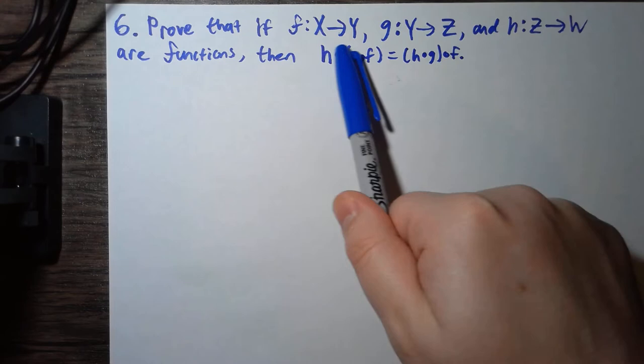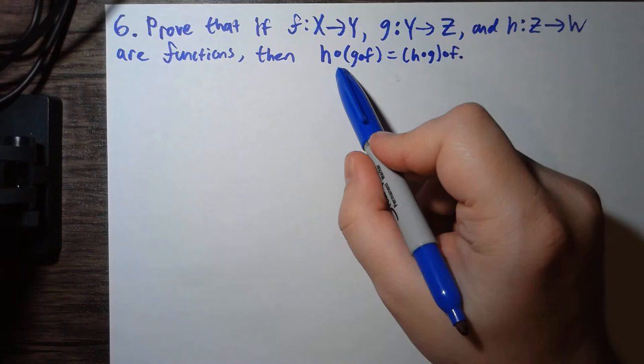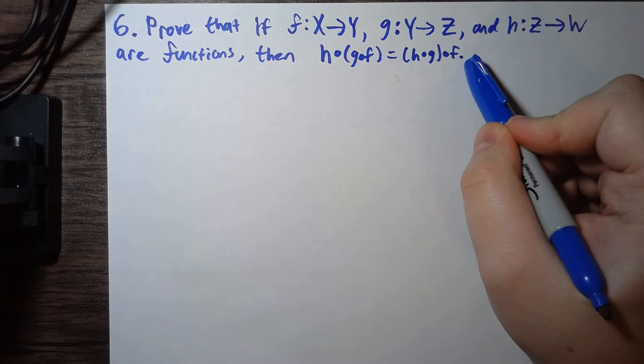Namely, we have functions f from X to Y, g from Y to Z, and h from Z to W. These are functions, and we want to prove that the composition h∘(g∘f) is equal to the composition (h∘g)∘f.